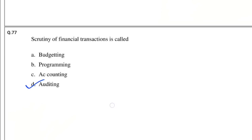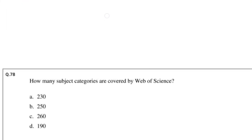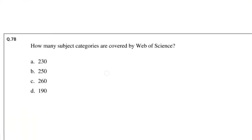Question number 78: How many subject categories are covered by Web of Science? Options: 230, 250, 260, 190. The answer is 250.